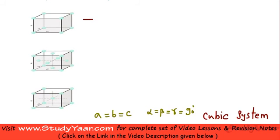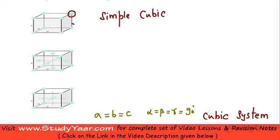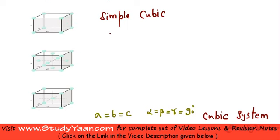The first variety is known as a simple cubic lattice. In a simple cubic lattice, at each of the eight corners of the cube you have lattice points — corresponding to eight corners, you have eight lattice points.